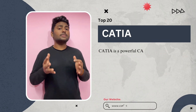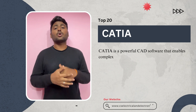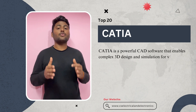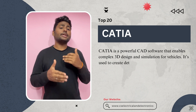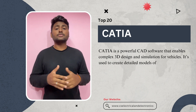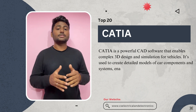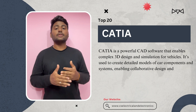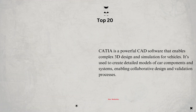Number 20: Catia. Catia is a powerful CAD software that enables complex 3D design and simulation for vehicles. It's used to create detailed models of car components and systems, enabling collaborative design and validation processes.